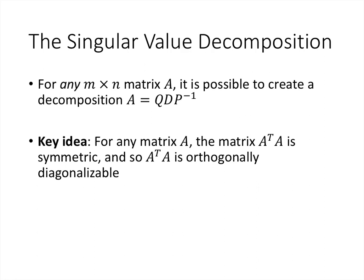It turns out that for any matrix A — and it doesn't even have to be a square matrix — any m by n matrix A can be written in the form Q times D times P inverse. So it's not quite as strong as diagonalizability because we have a different matrix Q than P. And as we'll see, the matrix D is not quite a diagonal matrix, but it's similar to a diagonal matrix.